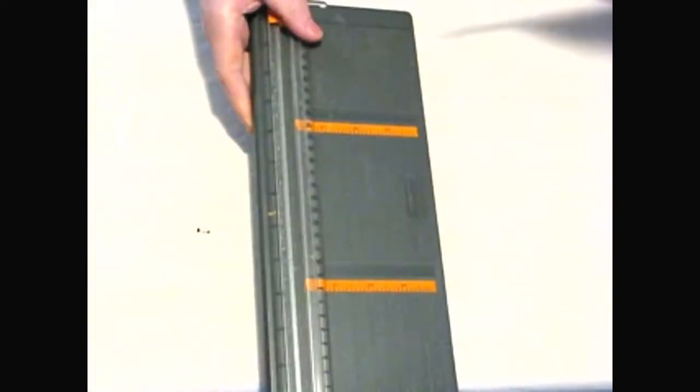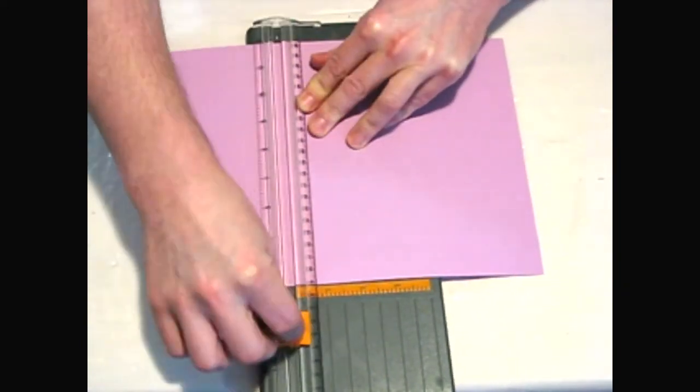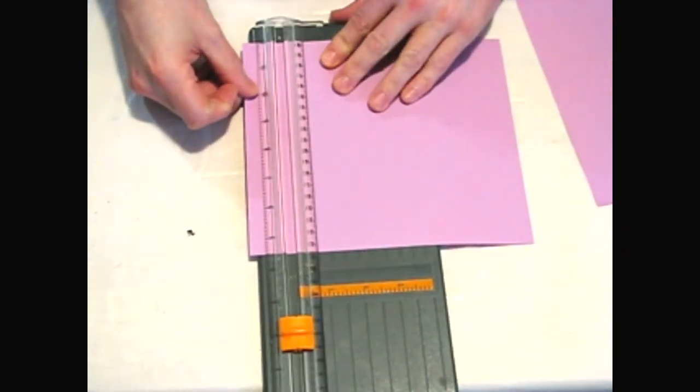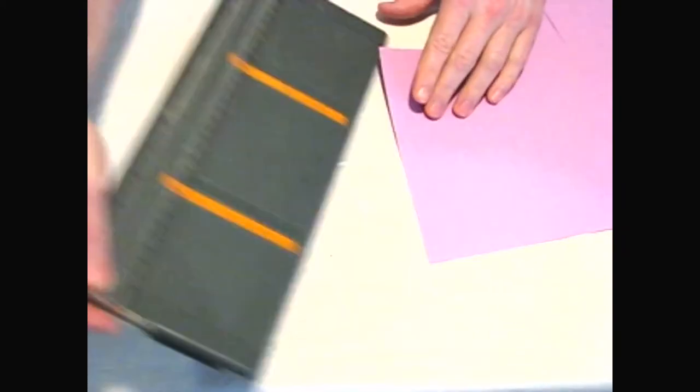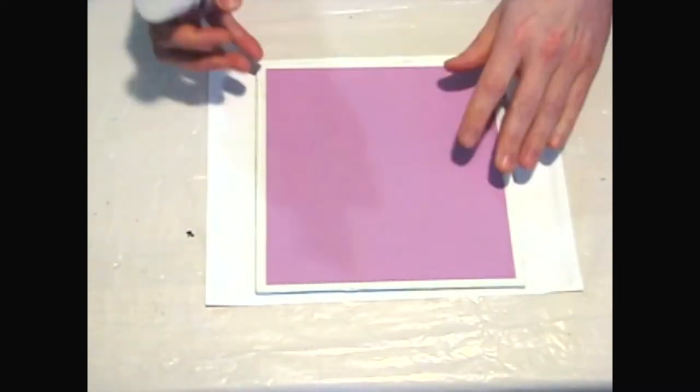You can use scissors to cut the paper because the edges will be covered by the standoff frame, but I use a paper cutter to make the edges cleaner. I do one rough fit to make sure that the paper was sized properly.